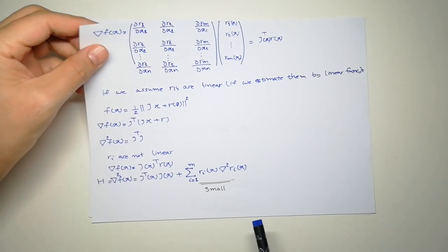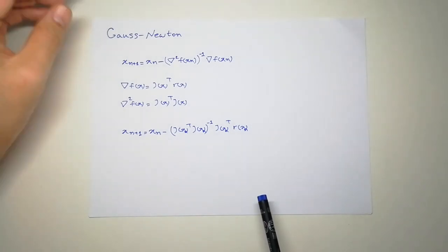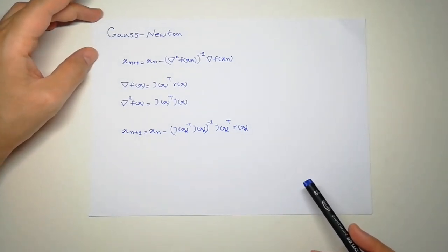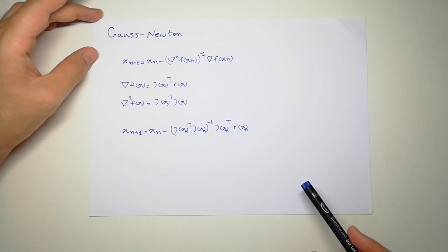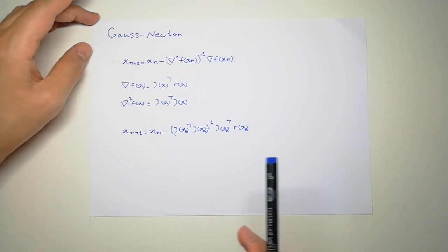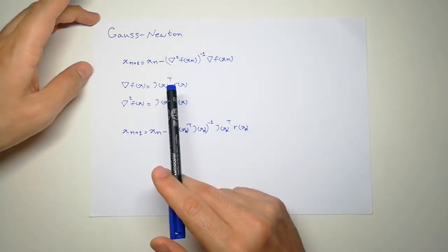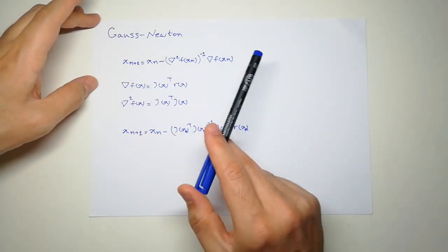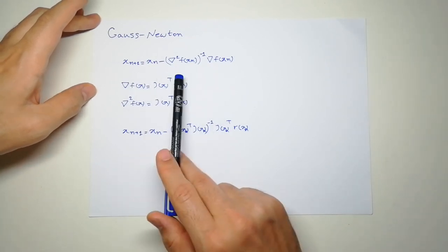If we review what we had in the Gauss-Newton method for finding a minimum of a function, if you don't know where we get this, you can look at my other video.